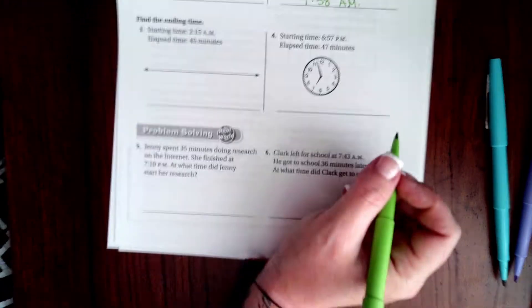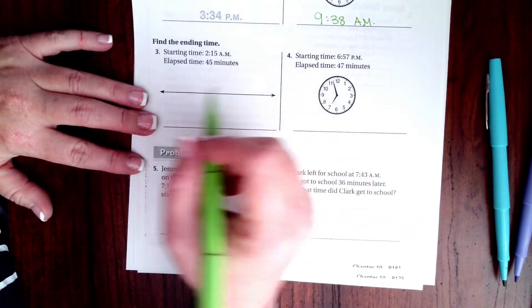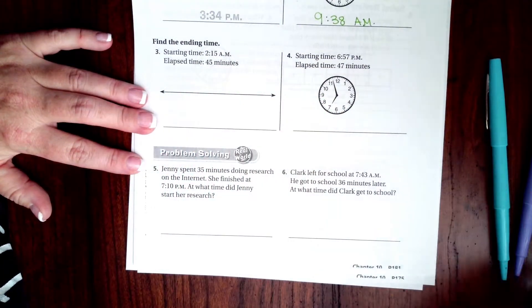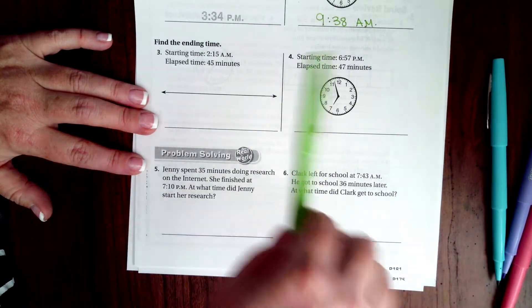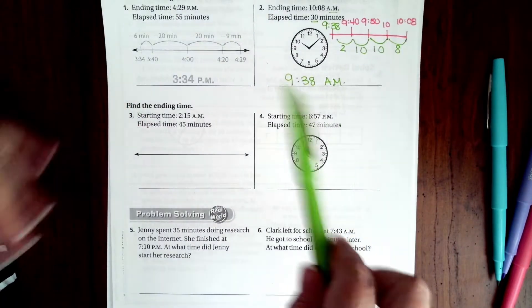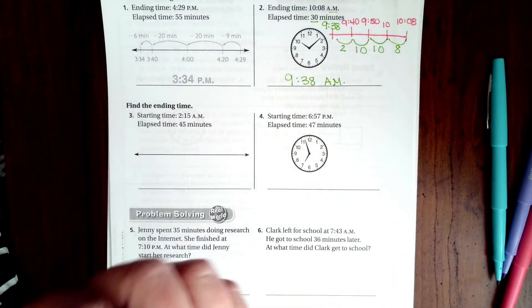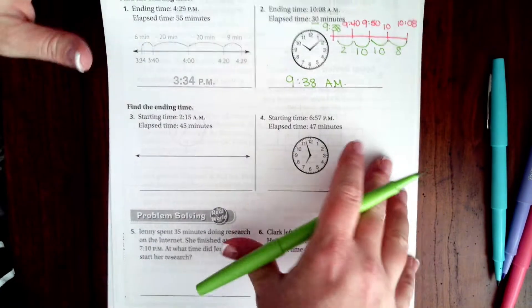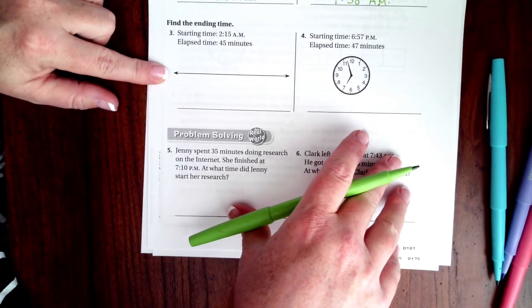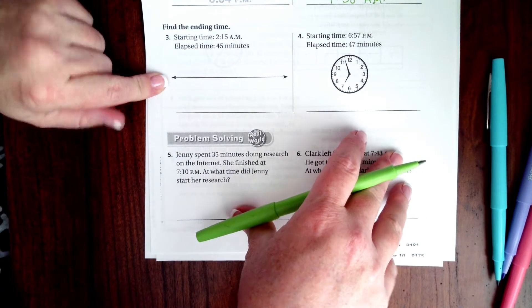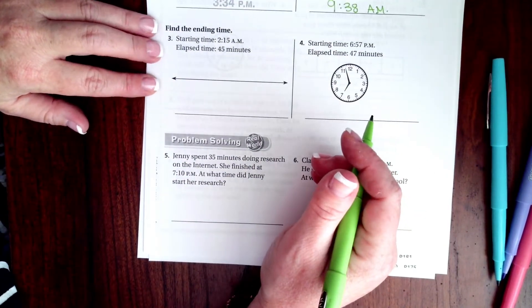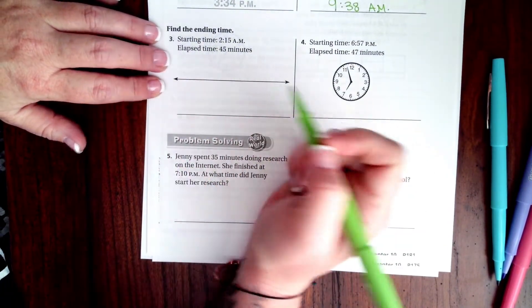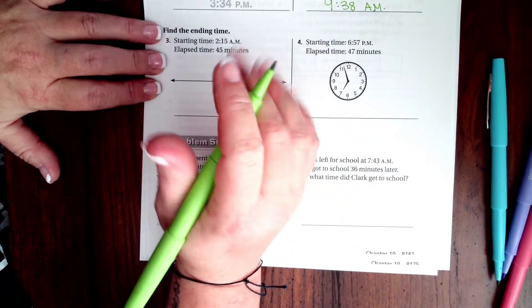Now, we're going to use the same method except this time, I'm going to start over here. Sometimes, it's a little bit easier. I just started it going backwards last time because we're going backwards in time and I wanted you to recognize that. This time, I'm going to start over here. I'm still going to go backwards in time, but we have to find an ending time this time. So, we're actually going forwards in time.